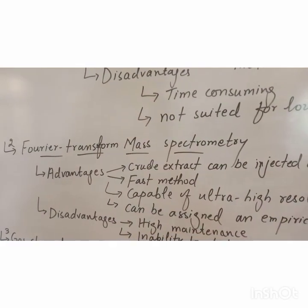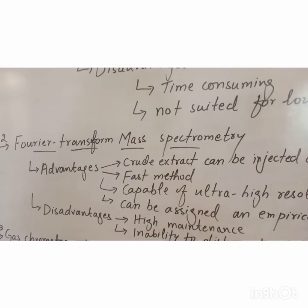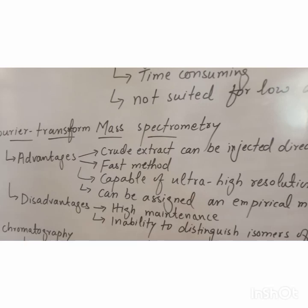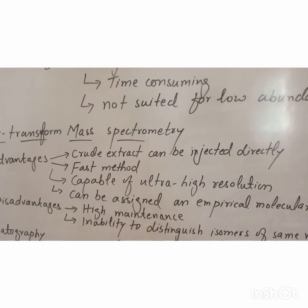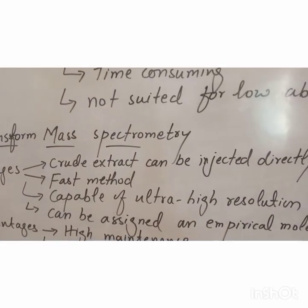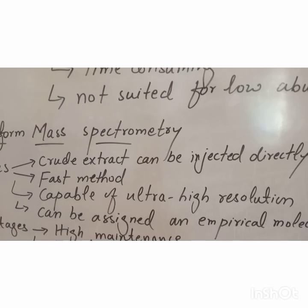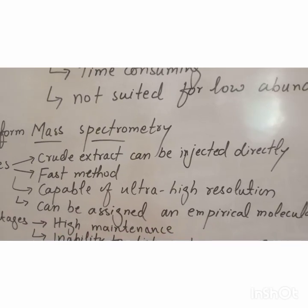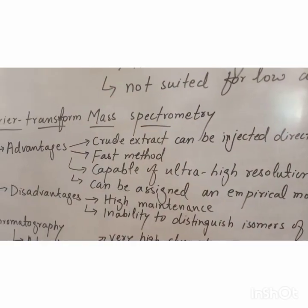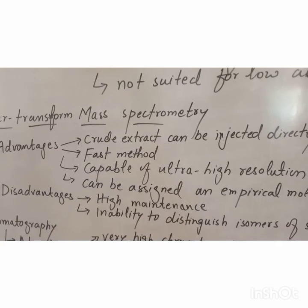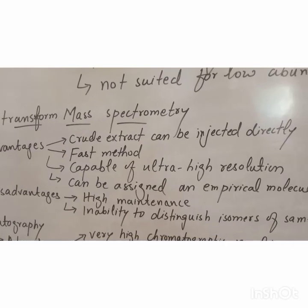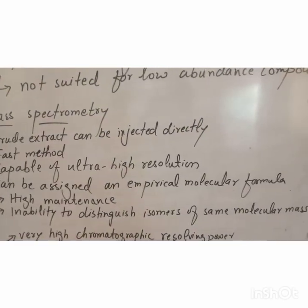Second technique is Fourier transform mass spectrometry. Advantages of this technique are that the crude extract can be injected directly, it is a fast method, it is capable of ultra-high resolution, and it can be assigned an empirical molecular formula. The disadvantages are high maintenance and the inability to distinguish the isomers of the same molecular mass.